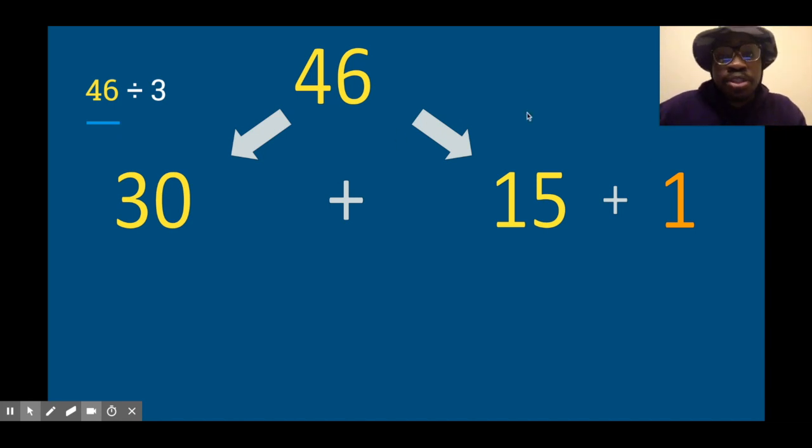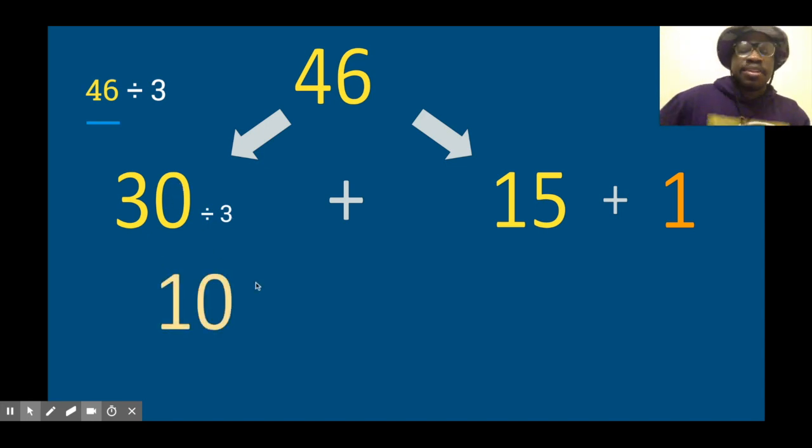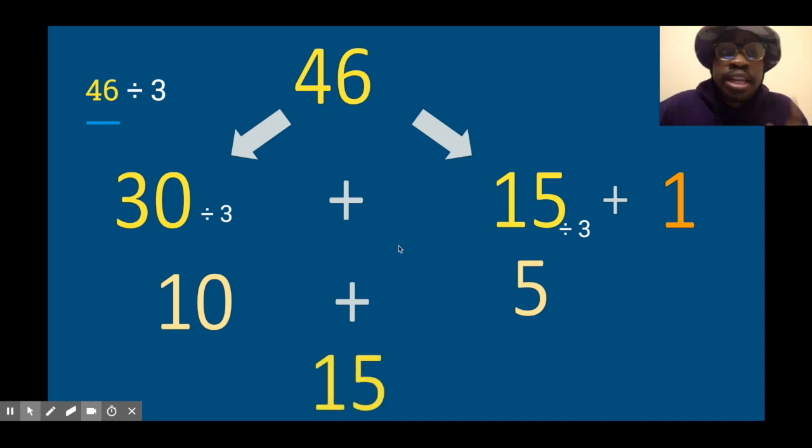30 divided by 3—we got that—is 10. 10 times 3 is 30. 30 divided by 3 is 10. And then 15 divided by 3, that is 5. Let's go! So those two together, 10 plus 5 is 15.